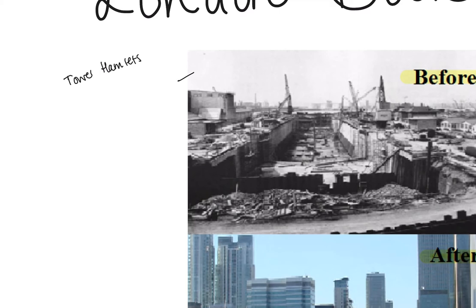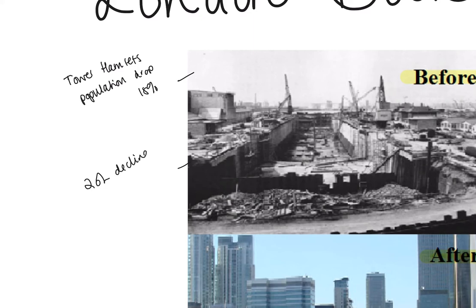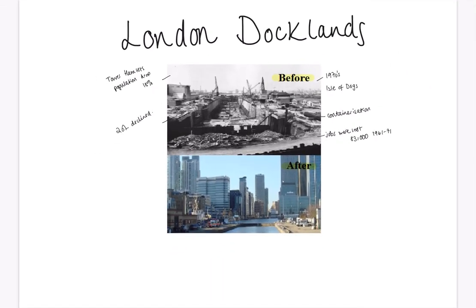One of the big impacts was a drop in the population — meaning people moving out of the area. In Tower Hamlets this was about 18%. Alongside that, the housing in the Docklands area was council-owned terrace housing and flats, and there was no commercial infrastructure — no banks, building societies, or offices. So quality of life declined as well. You normally have a good quality of life if you have access to parks, shops, and food. That was what the situation was like before.